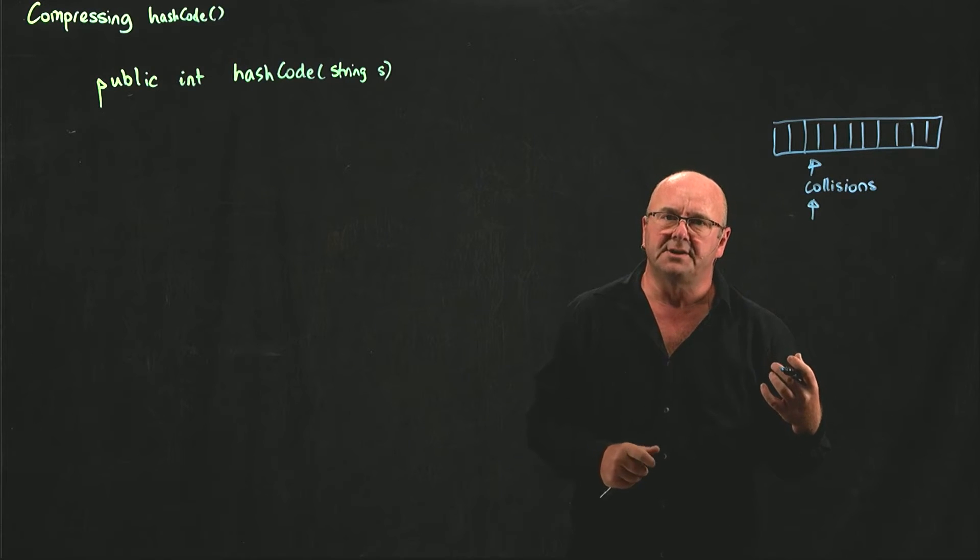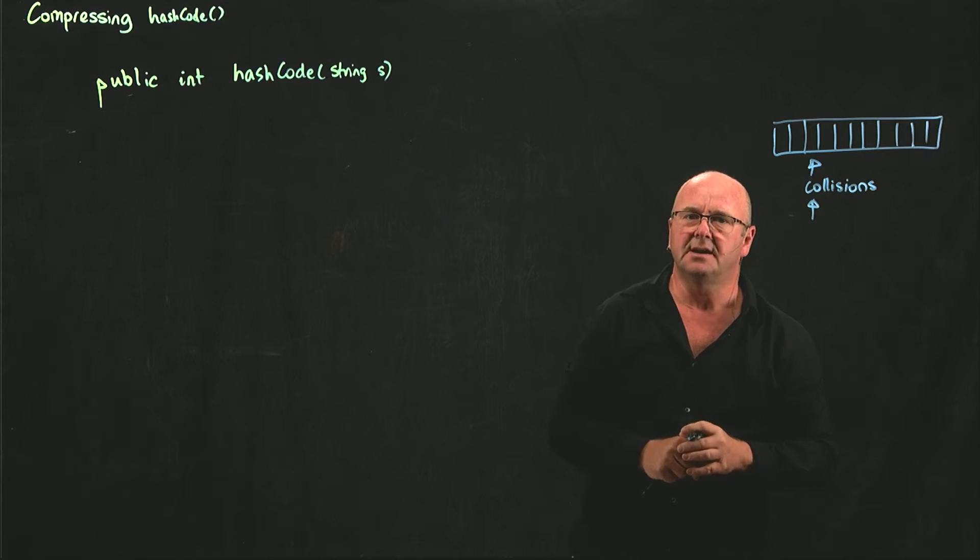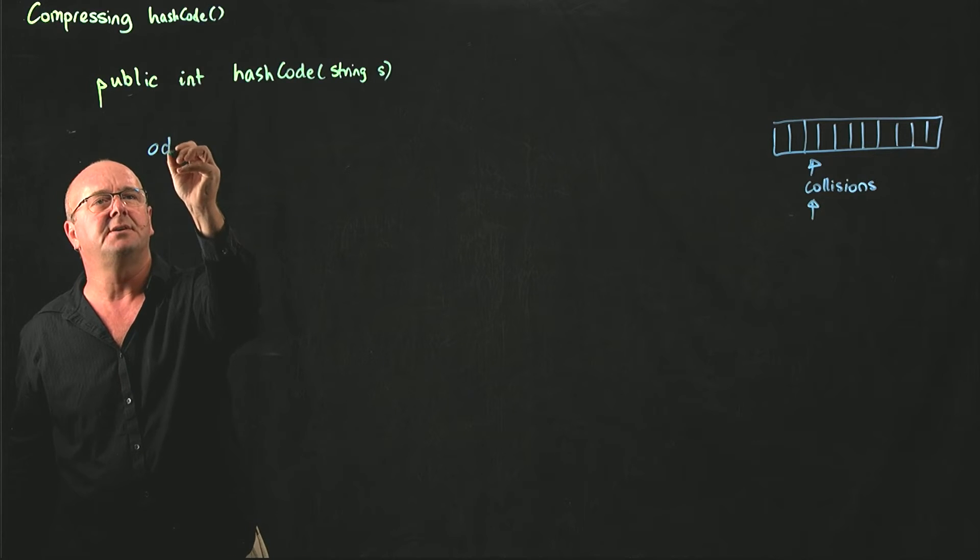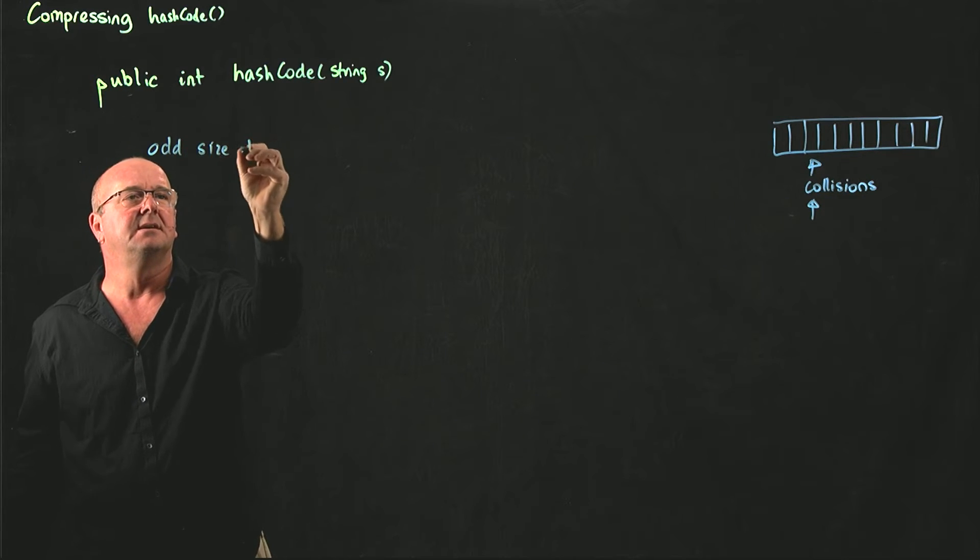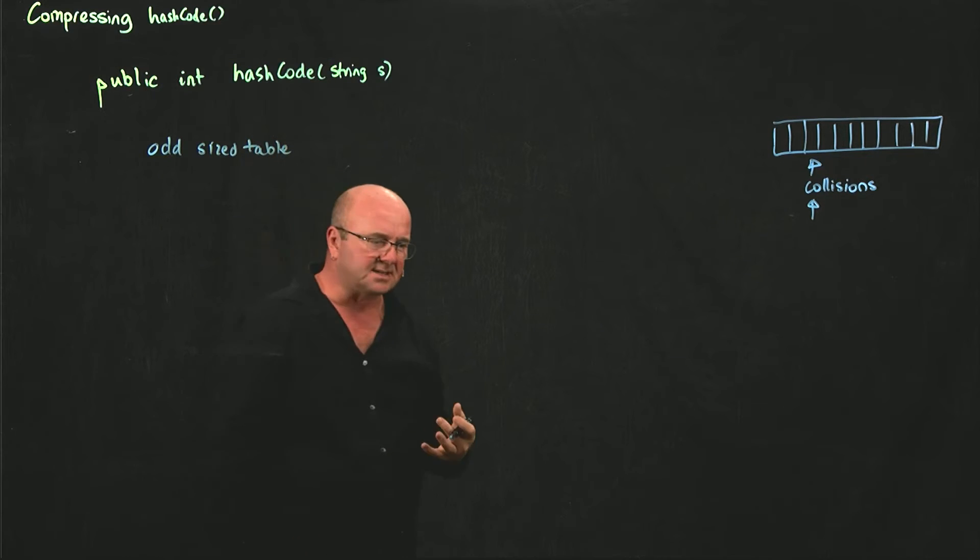One of the ways that we can try and reduce those collisions is by optimizing the table size. And a couple of optimizations that we can do are to use an odd-sized table, because that reduces some of the bias that happens when we use the modulo function to reduce the int to the size of the table.